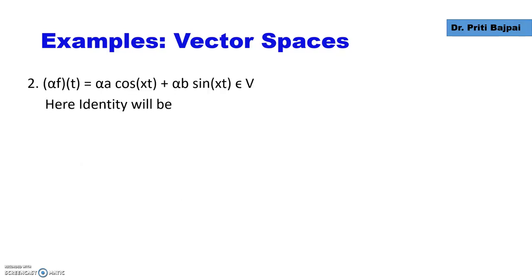In the same way, if we multiply the function f by alpha, again it belongs to V. Both the closure properties are satisfied.